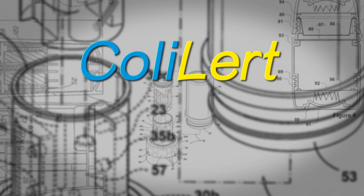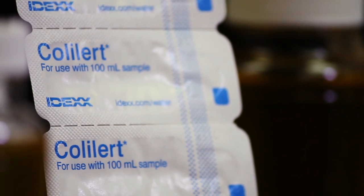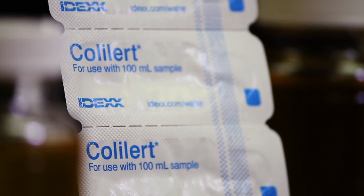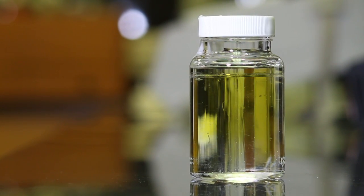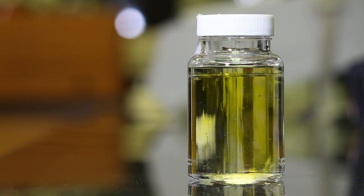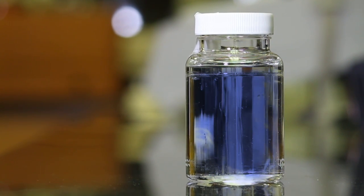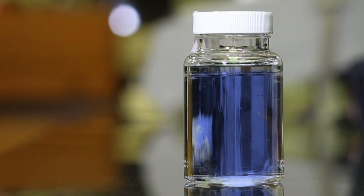Colilert is the newest of these three methods and has been used to determine the safety of water supplies for over 20 years. In this simple method, we look for color changes in our test vial to determine if total coliforms and or E. coli are present in a water sample.